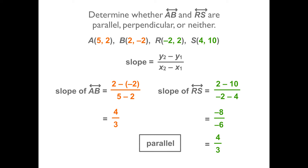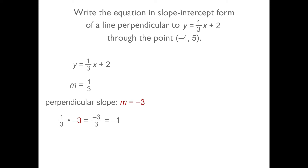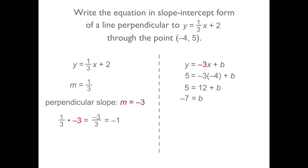Another common problem is to find the equation of a line parallel or perpendicular to a given line. Here, we need to write the equation in slope-intercept form of a line that is perpendicular to y equals one third x plus 2 and passes through the point negative 4, 5. The slope of our given line is one third, so the perpendicular slope must be negative 3, as one third and negative 3 multiply to equal negative 1. Substitute the perpendicular slope of negative 3 into the slope-intercept form y equals mx plus b. Since the line must pass through the point negative 4, 5, substitute those values in for x and y and solve for b. The equation of the perpendicular line is y equals negative 3x minus 7.